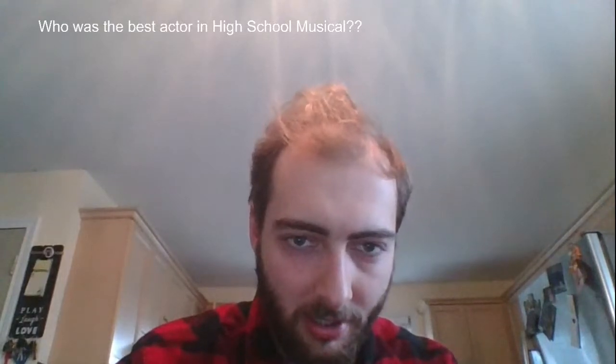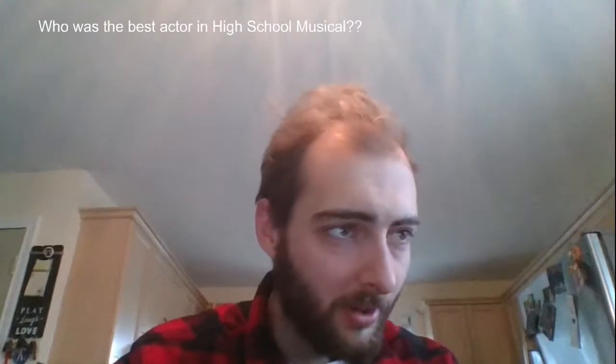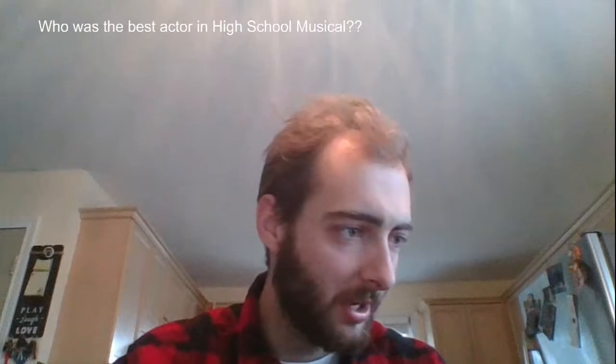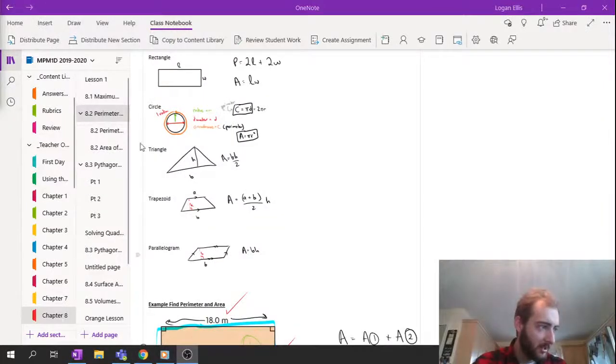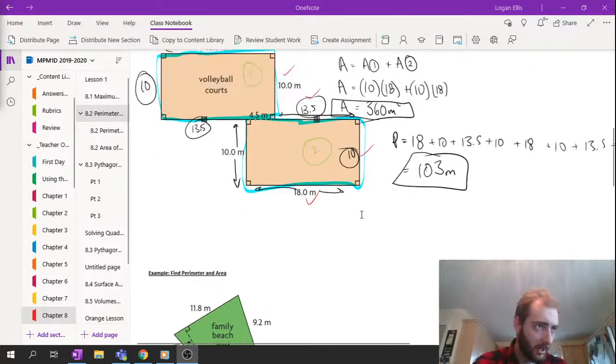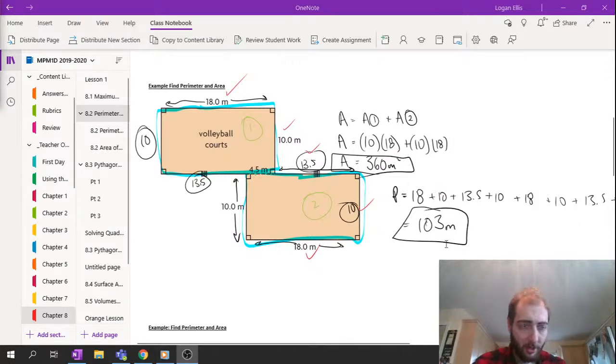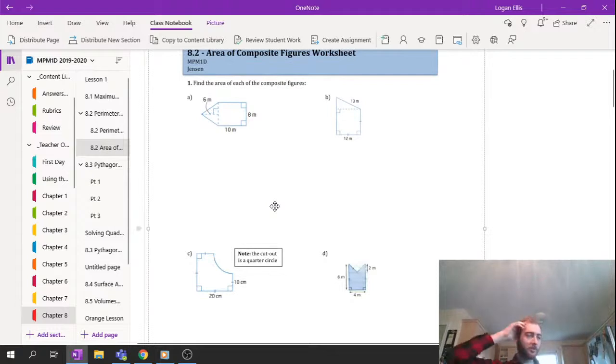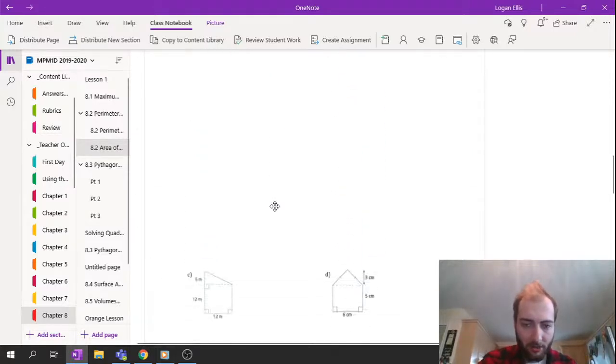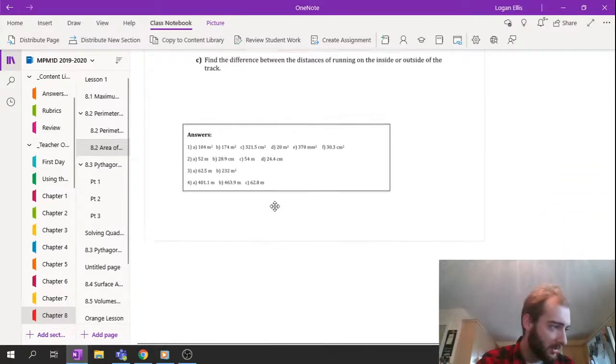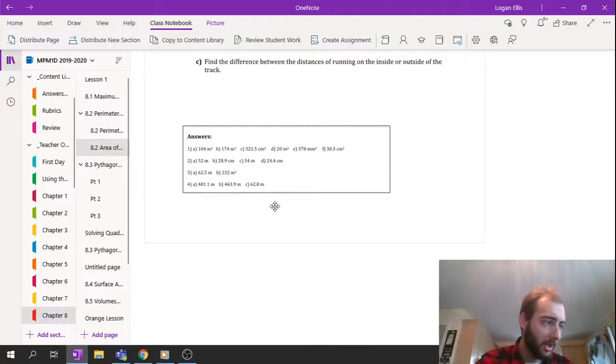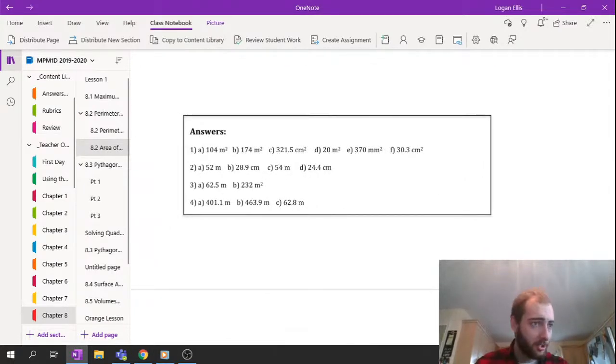I guess this would have been two days ago now. Sorry. We did perimeter and area of weird shapes. Right? We need to find the perimeter, the area of all these different things. So, let me just share my screen with you guys. And then we can see if you guys had any weird issues with some of these. Remember, this was our doing our area. This is doing our perimeter. Remember to include the units, especially.